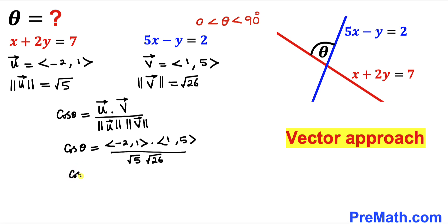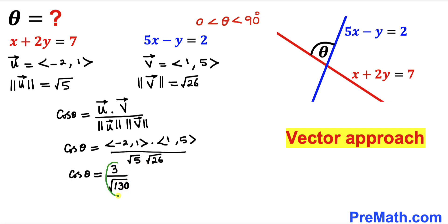So therefore cosine of theta equals 3 at the numerator, divided by the square root of 5 times 26 — which gives us the square root of 130 at the denominator. We can see that this value is positive, and we know that angle theta is in between 0 and 90 degrees.